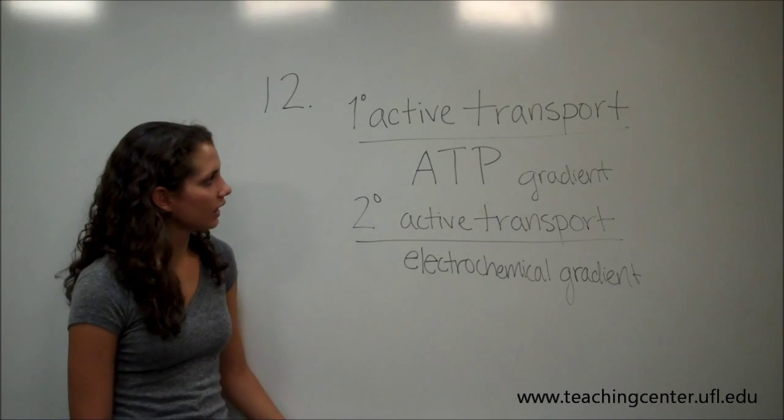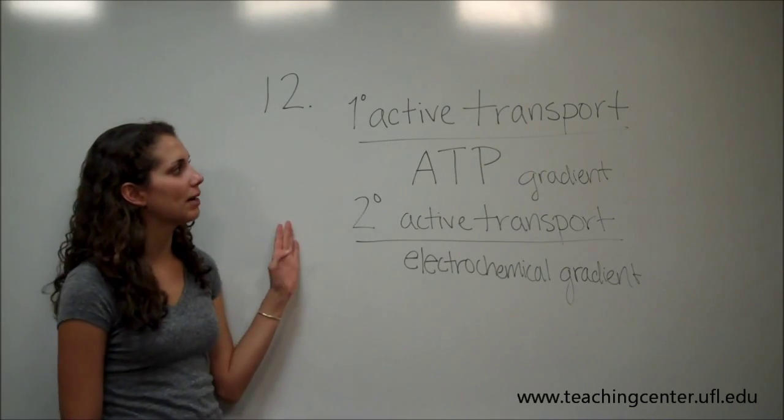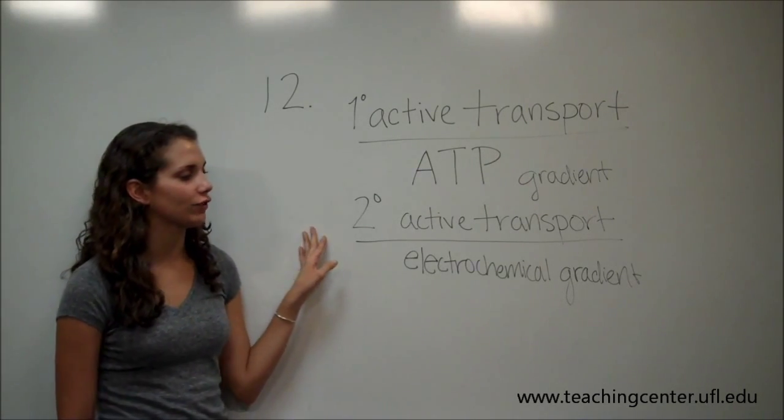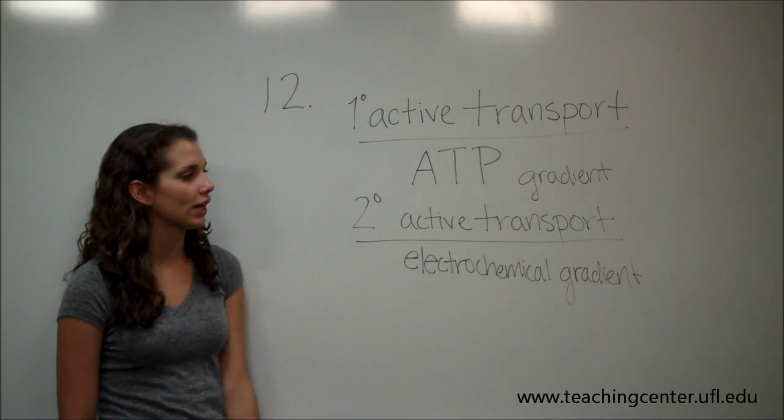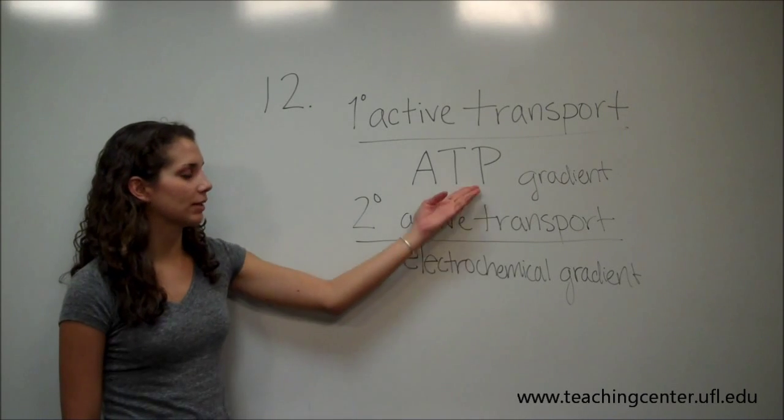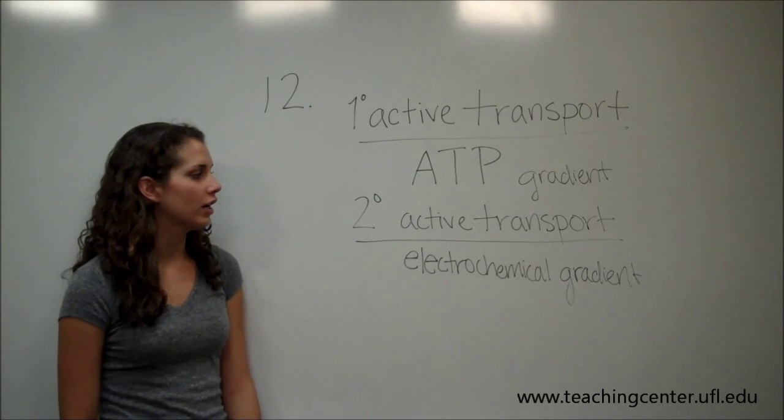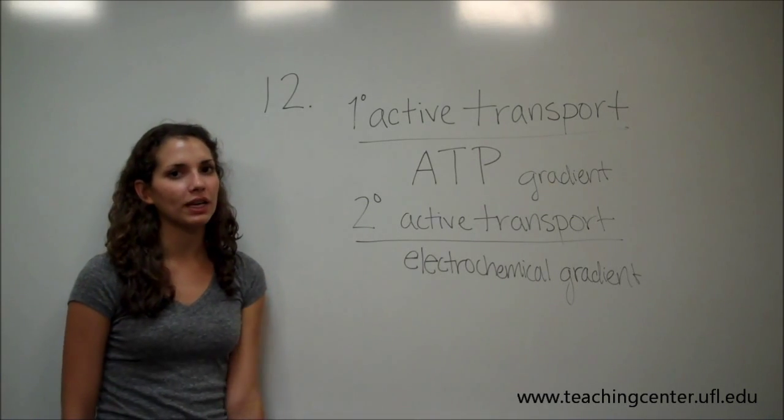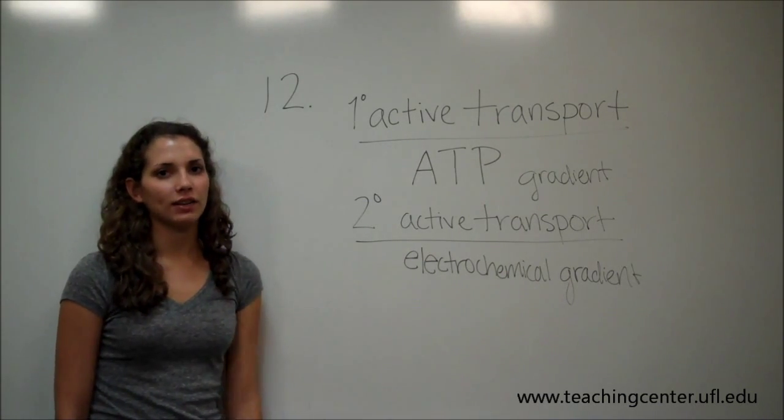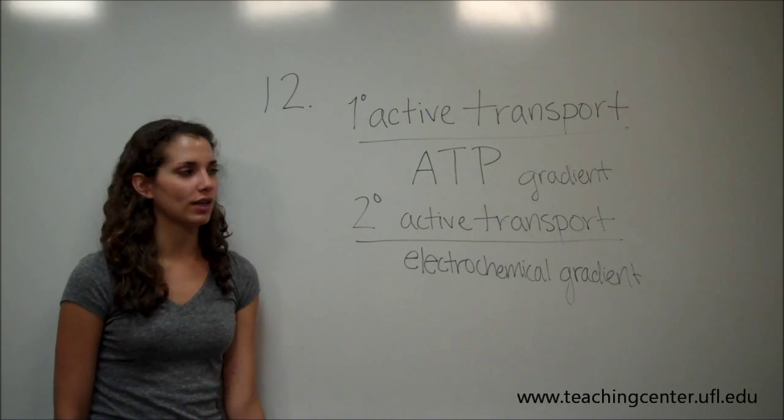So we're going to start with A. I have written here a little summary of primary active transport and secondary active transport. Just remember that primary active transporters involve chemical energy, so for example ATP gradients are necessary, while secondary active transporters involve an electrochemical gradient. So this would be another ion gradient like sodium or proton gradient.